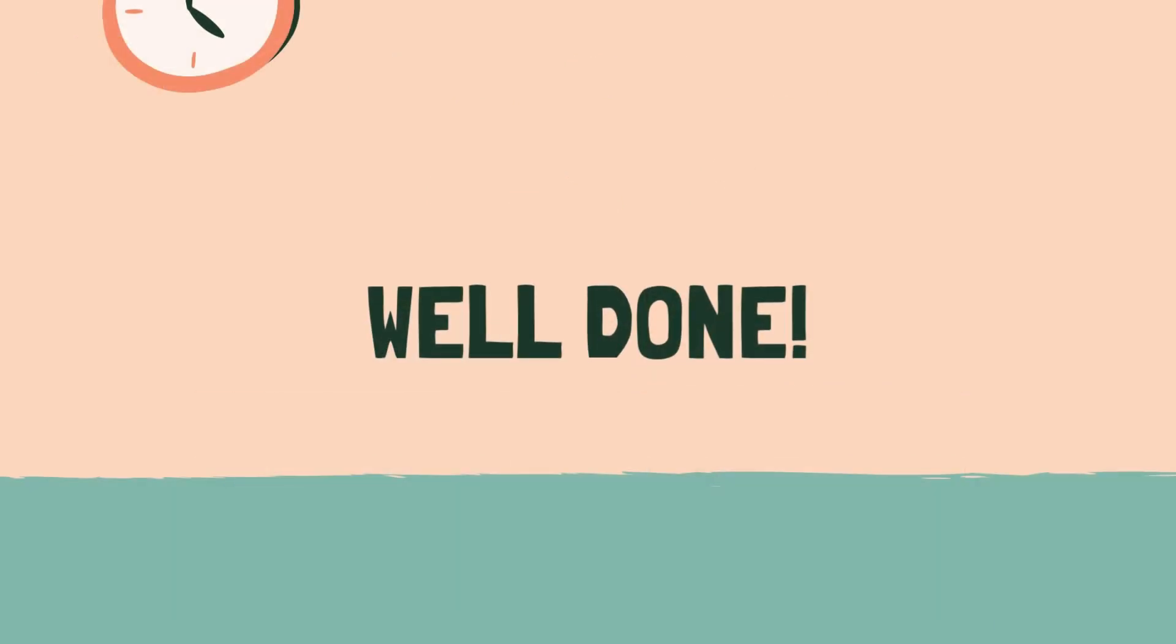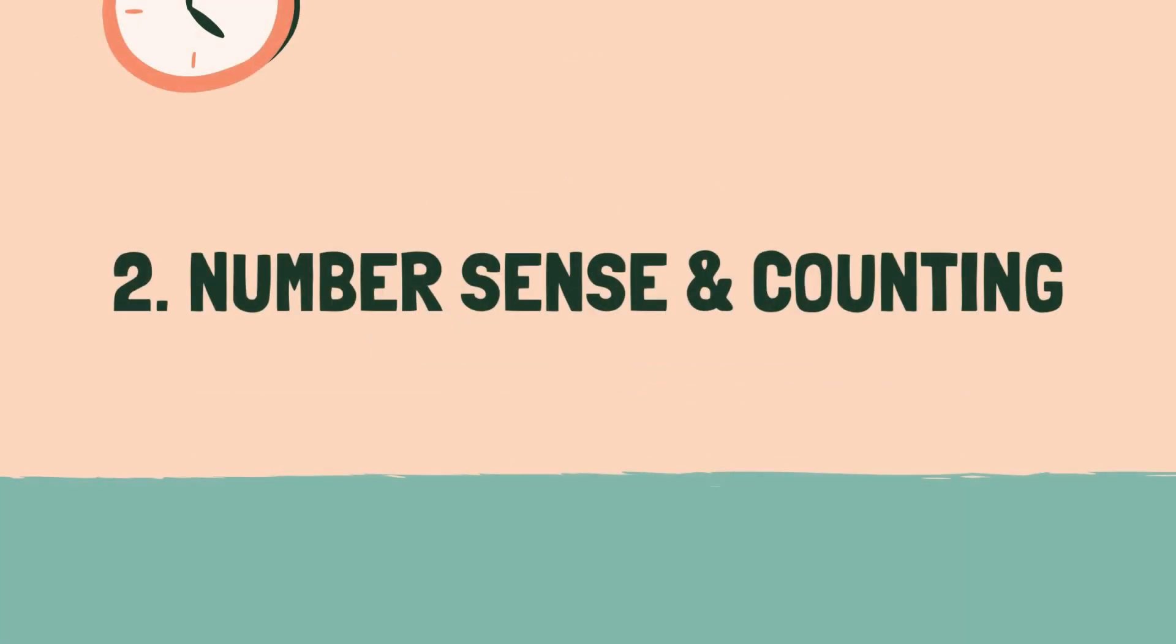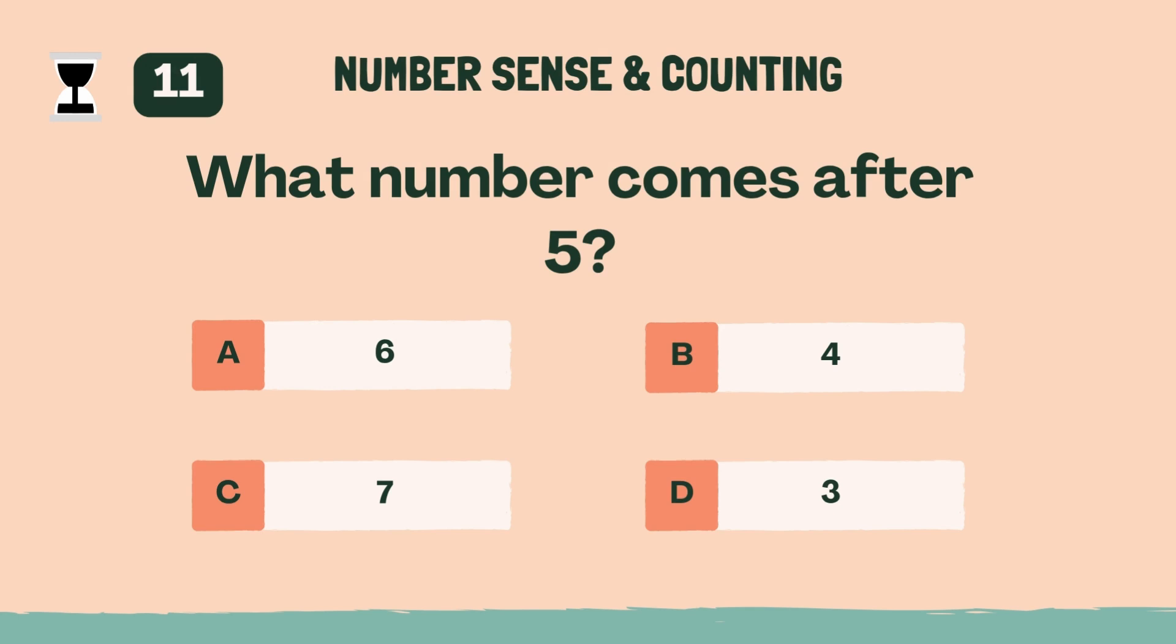Well done. Let's move on to the next category. Category 2, number sense and counting. 3, 2, 1, go. What number comes after 5? A, 6.